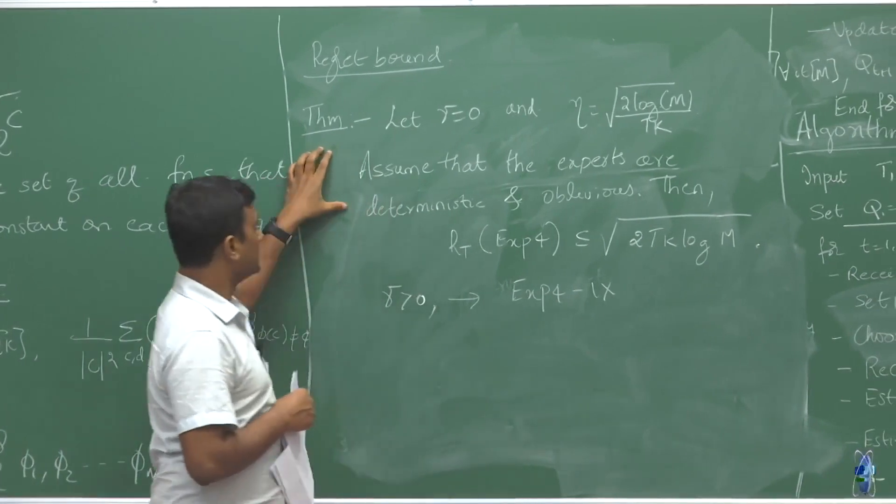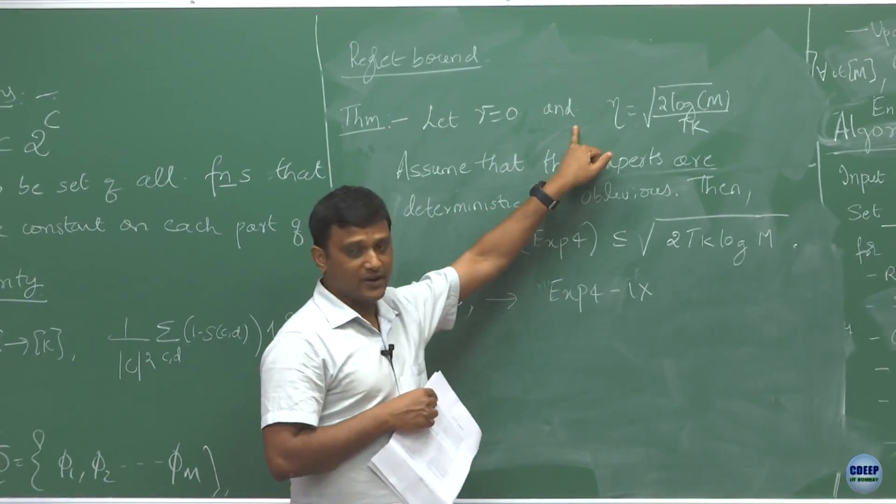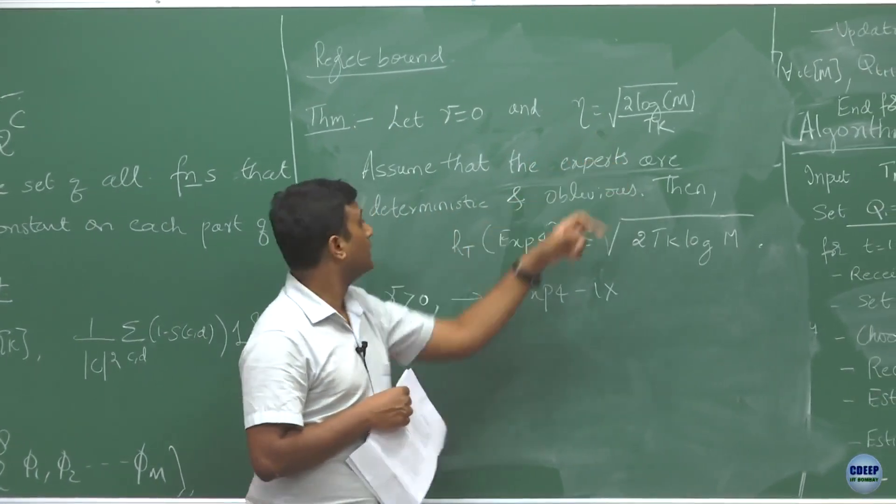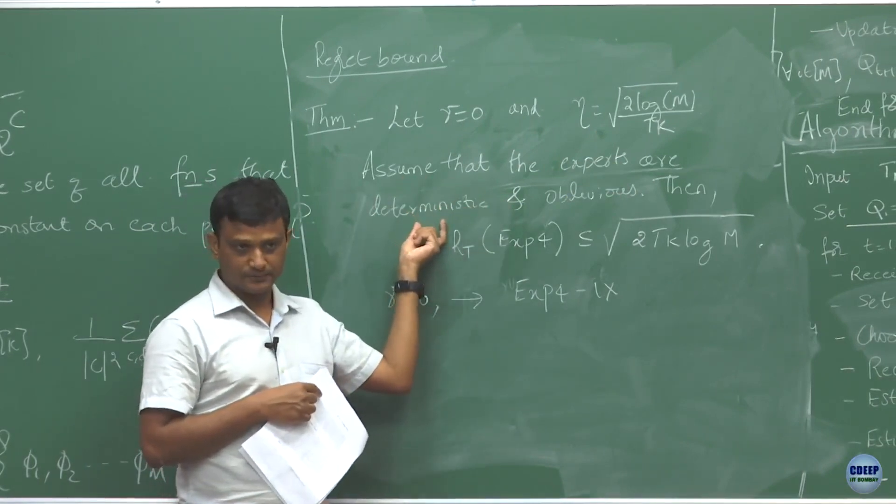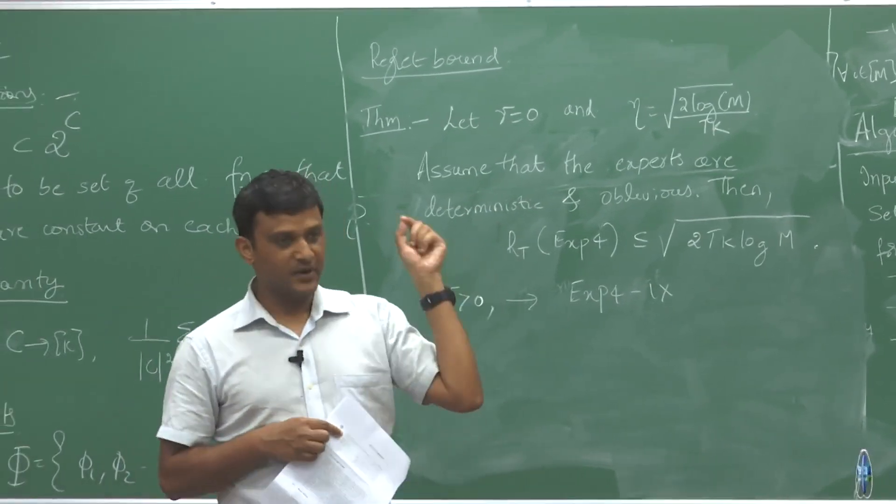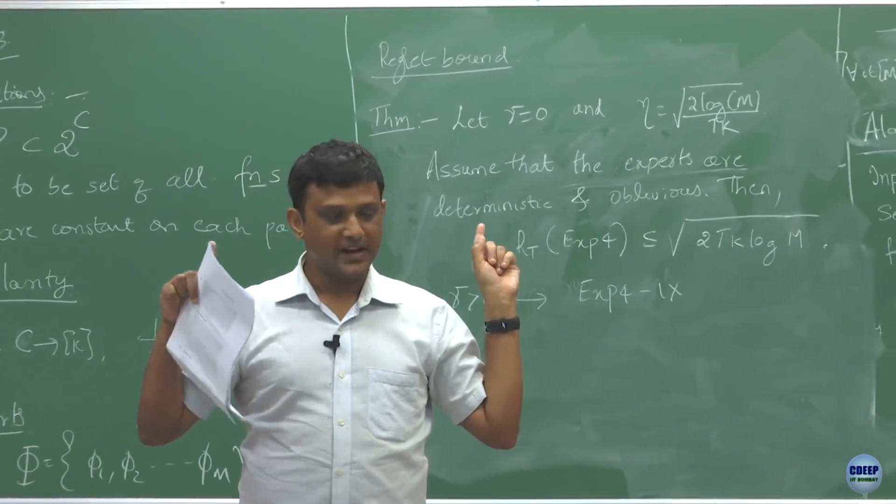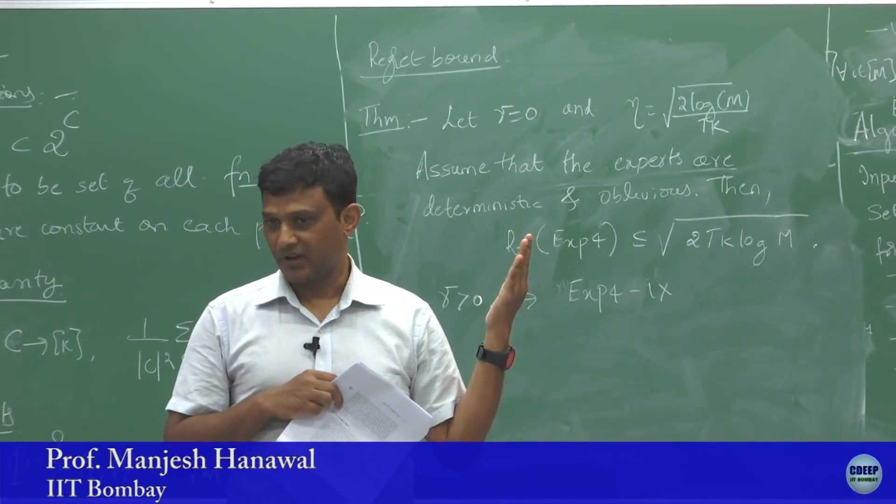Now let us revisit this. Here what we are saying: take gamma equals 0, set your eta to be in this fashion, and then assume that experts are deterministic. What I mean by deterministic here is, yes, experts are actually giving me a probability vector, but it is going to be the same every time I give a particular context.